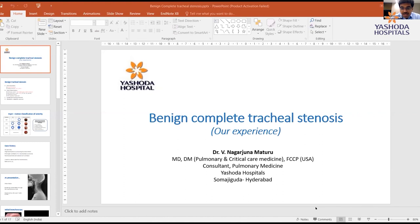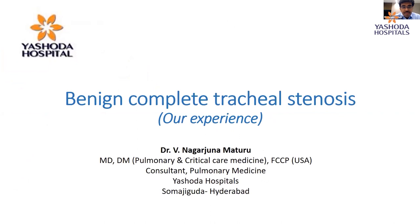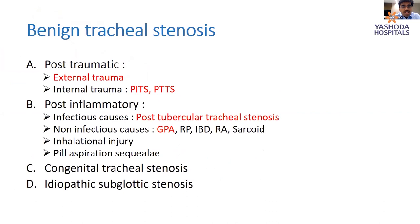I'll be presenting a case of a benign complete tracheal stenosis. We have a lot of causes for tracheal stenosis, but in our setup the common causes — the most common cause is PITS, that is post-intubation tracheal stenosis, followed by post-tracheostomy, trauma, and then TB. TB more often causes bronchial and bronchotracheal stenosis, but for isolated tracheal stenosis, PITS is the commonest thing we see in our part of the world.